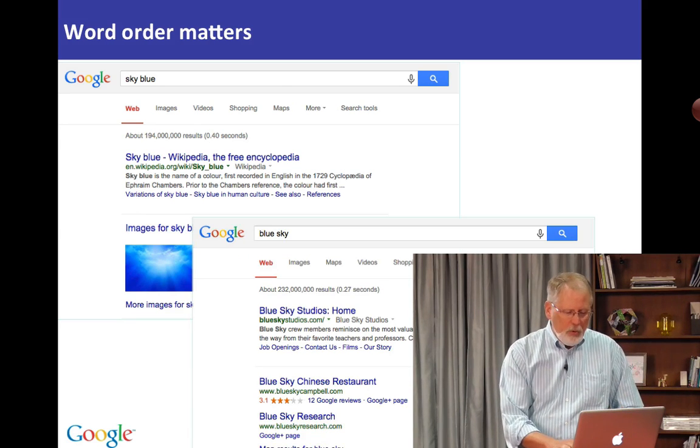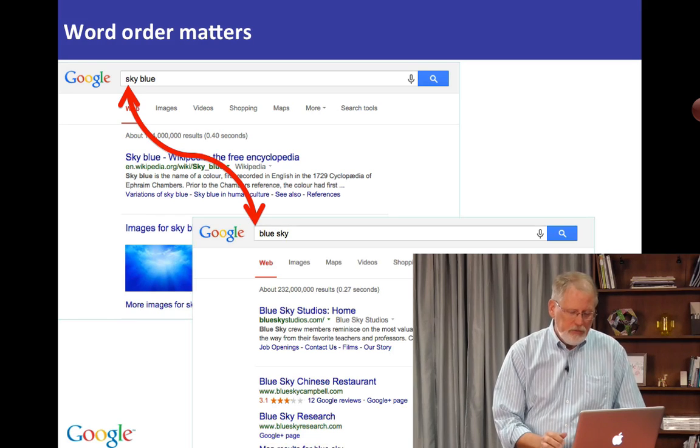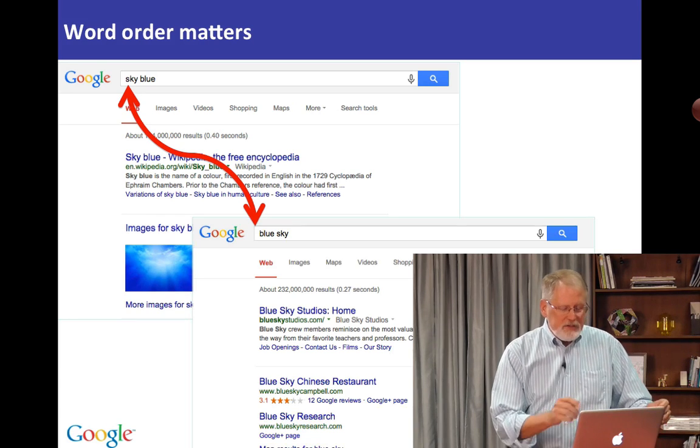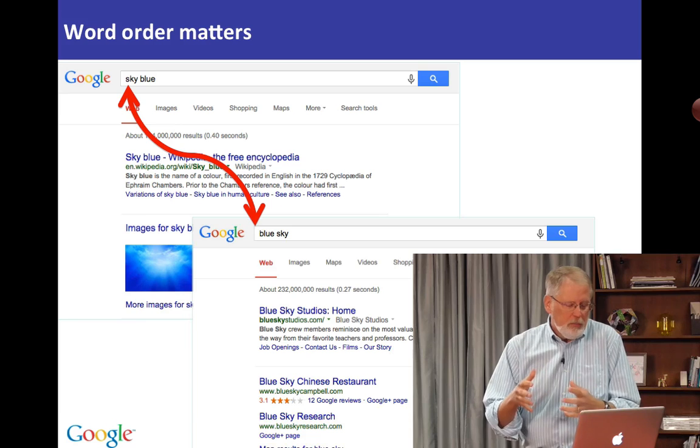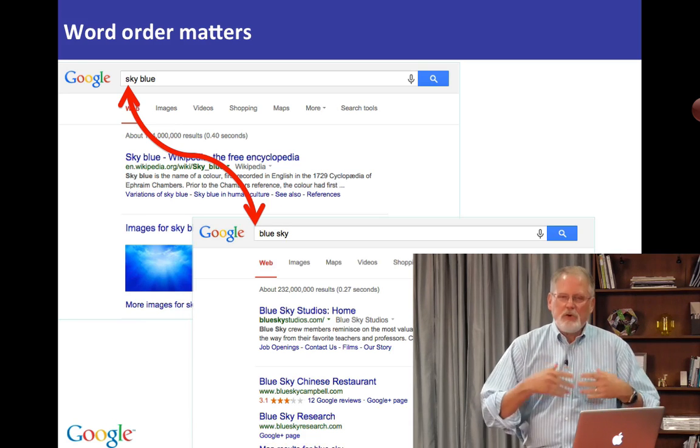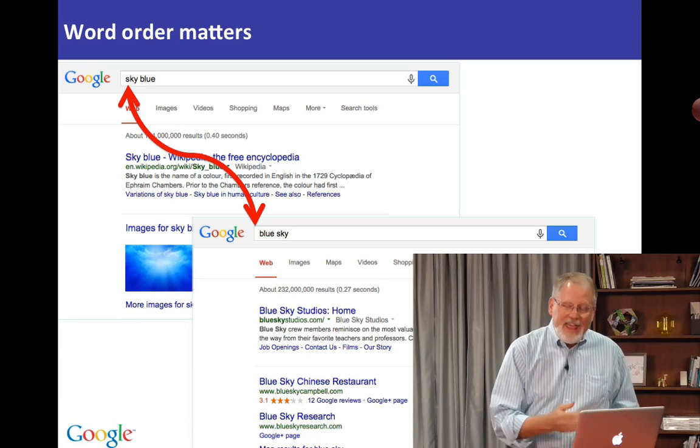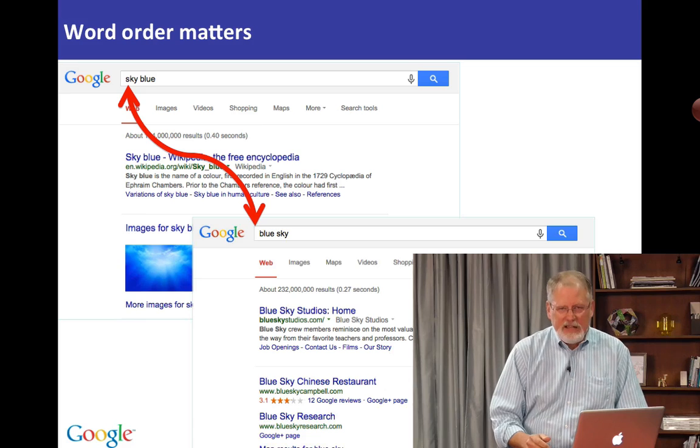When we reverse the order of the query terms like that, what you see now is that the results refer to Blue Sky Studios, Chinese restaurants, and so on. They're all the names of different businesses in the area.